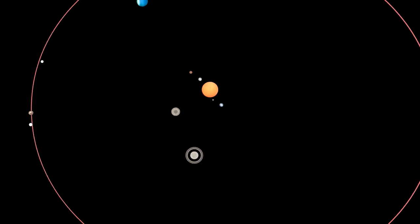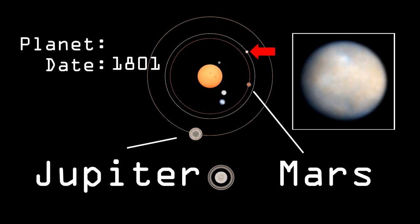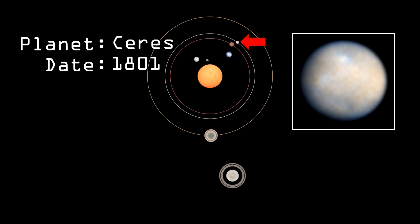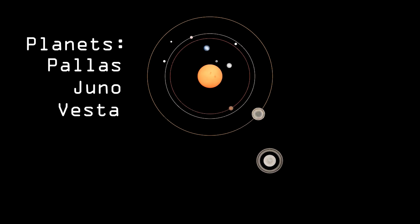And this wasn't the first time something like this had happened. In 1801, a new object was discovered orbiting between Mars and Jupiter. It was given the name Ceres. During the early 1800s, Ceres, along with its neighbors Pallas, Juno and Vesta, were considered planets.